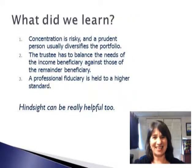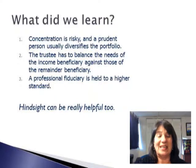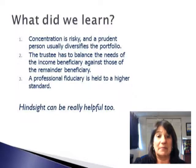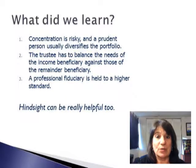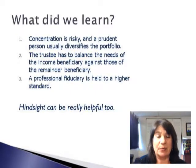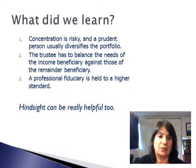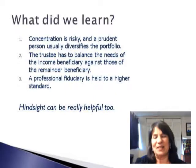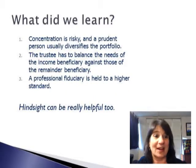So what did we learn from this case? Concentration in itself is risky, even if you're concentrated in something really solid. A prudent person, therefore, usually diversifies the portfolio. Moreover, the trustee has to balance the needs of the income beneficiary against those of the remainder beneficiary — we can't just invest in growth stocks, we need to provide income for the person who's supposed to get the income. And a professional fiduciary is held to a higher standard. Of course, hindsight really helped a lot here.